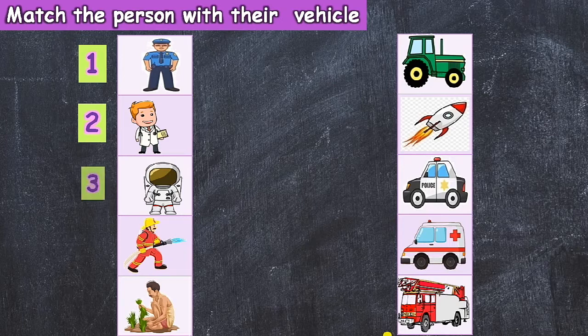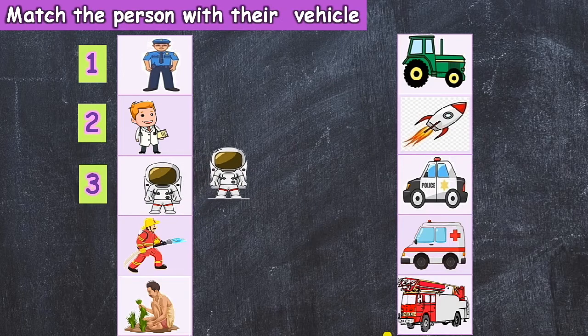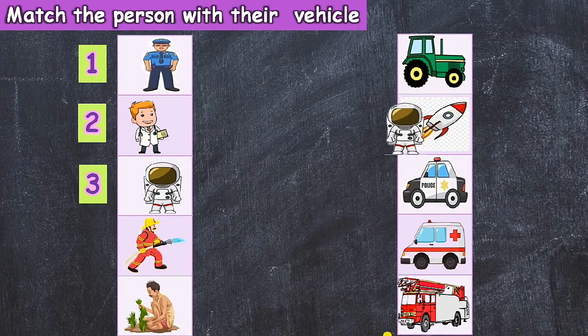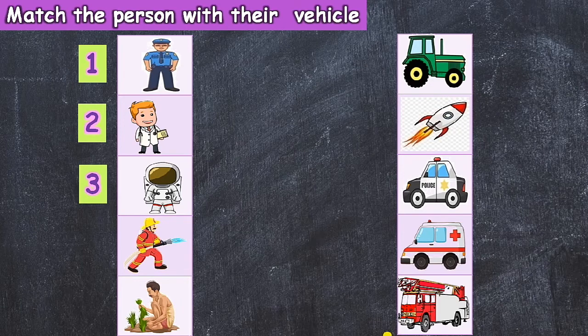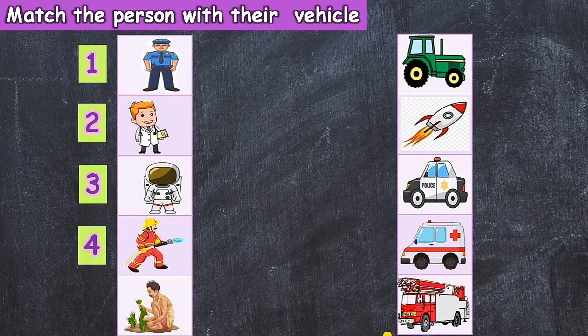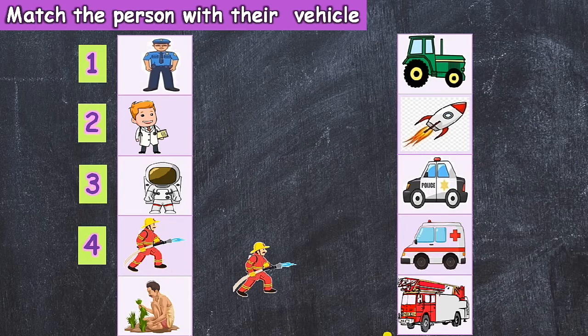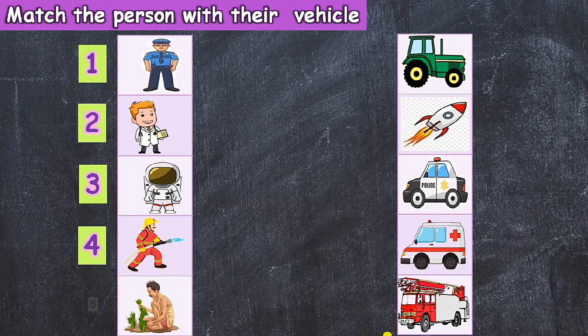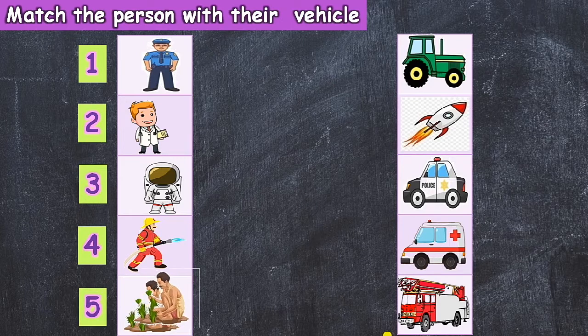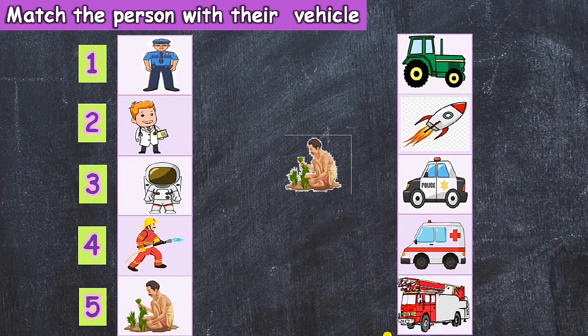Third one, he is astronaut and his vehicle is rocket. Fourth one, he is fireman and his vehicle is fire engine. Next fifth one, he is farmer and his vehicle is tractor.